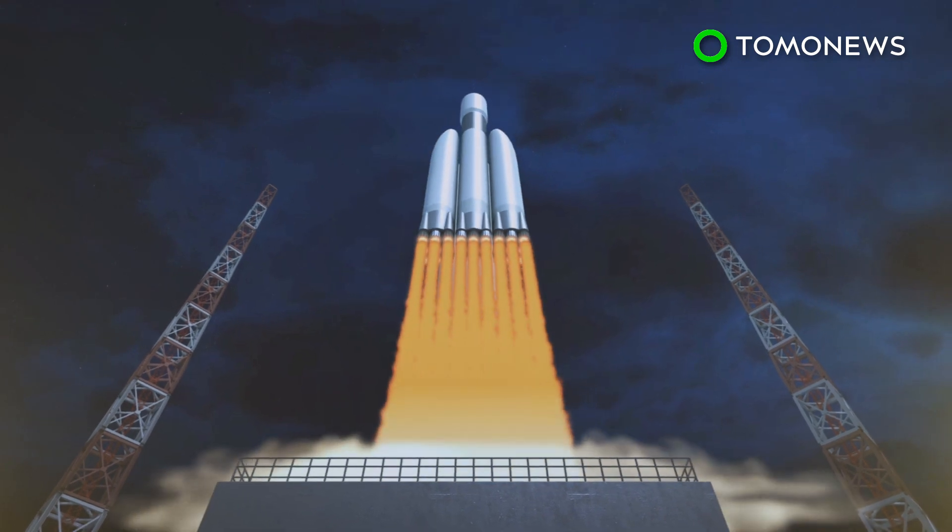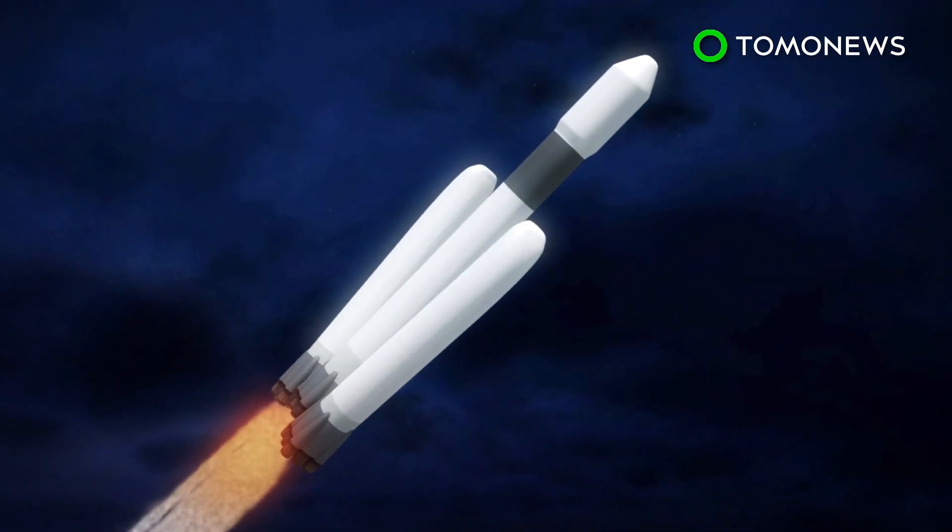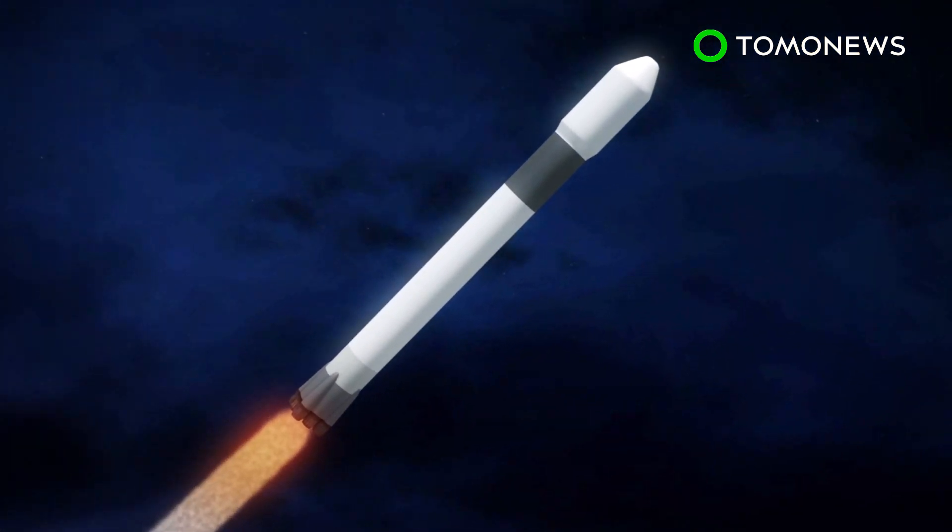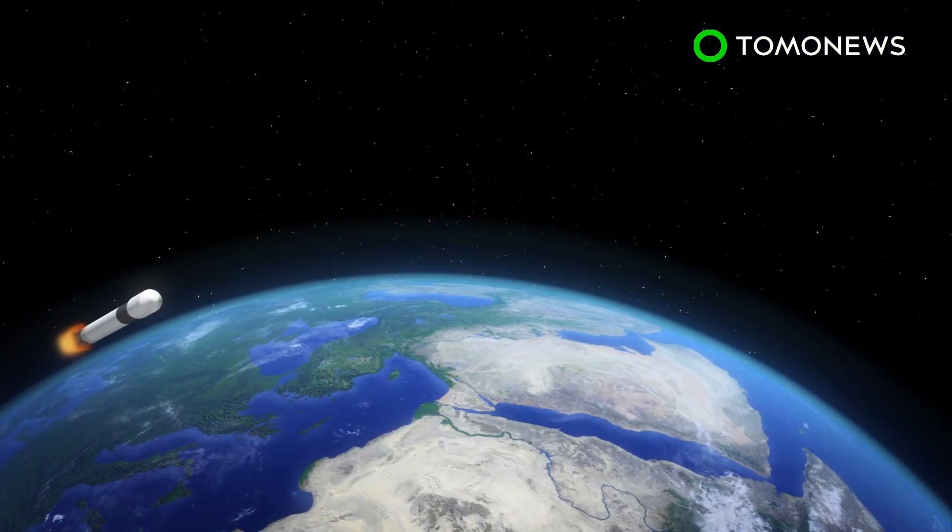India's space agency was set to launch the Chandrayaan-2 lunar mission from Satish Dhawan's space center on July 15th. The launch was postponed on Monday due to a technical error.